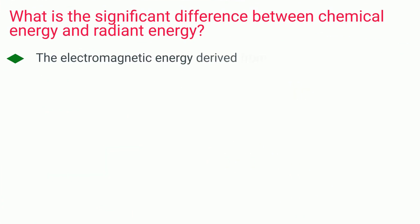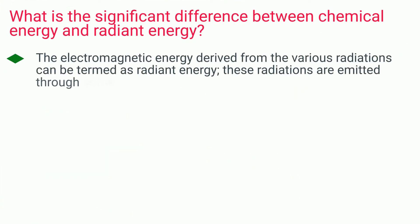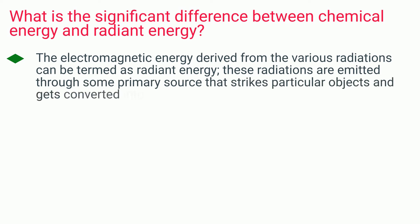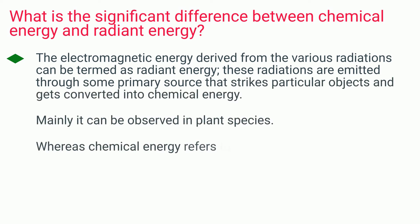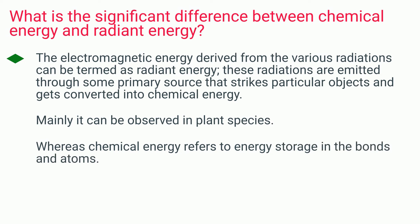The electromagnetic energy derived from various radiations can be termed radiant energy. These radiations are emitted through some primary source that strikes particular objects and gets converted into chemical energy, mainly observed in plant species. Whereas chemical energy refers to energy storage in the bonds and atoms.